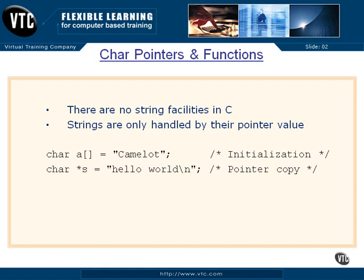Let's take a look at the use of some character pointers and a little bit of function calls with it. First of all, there are no string facilities in C. The C programming language does not understand what a string is, really. A string to it is just an array of characters with a null at the end, some way of telling you that you're at the end of the string.